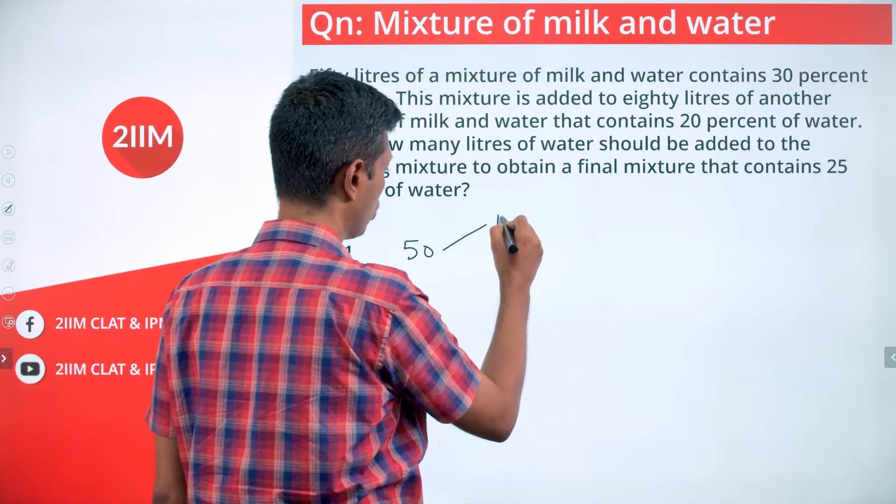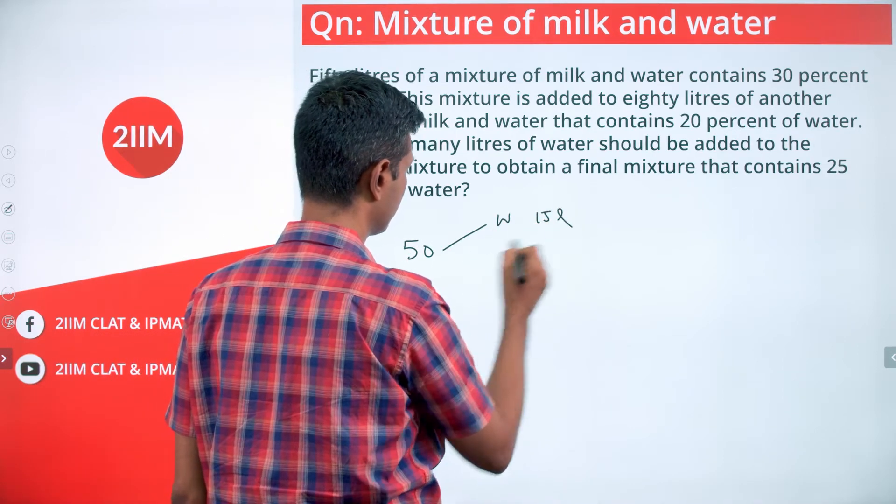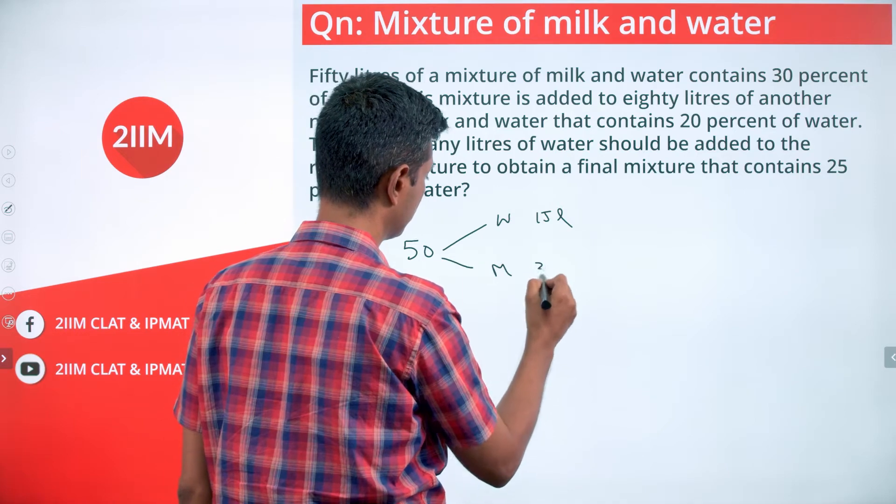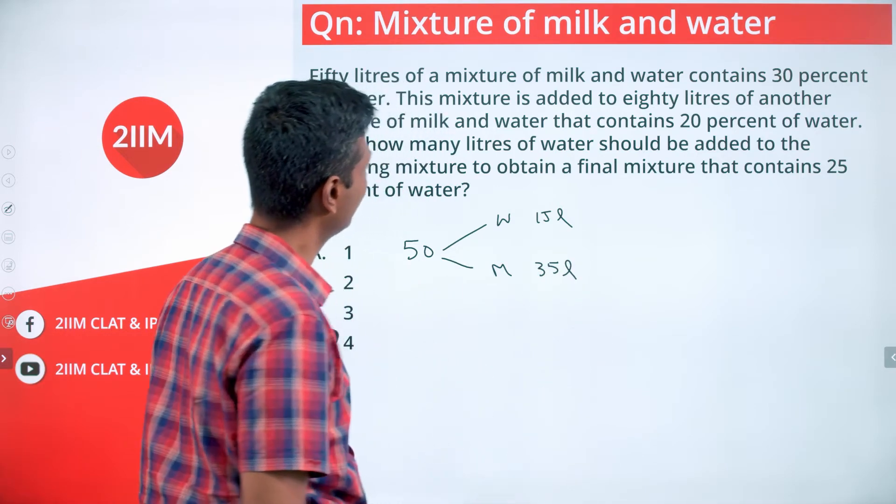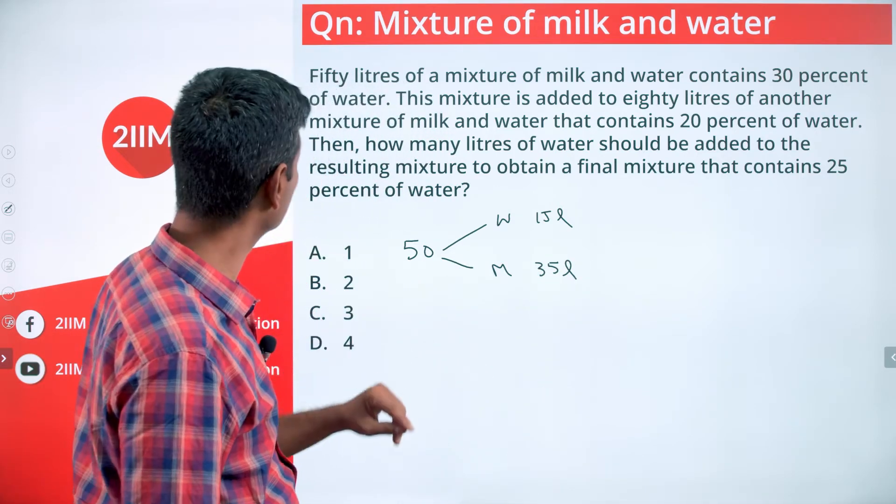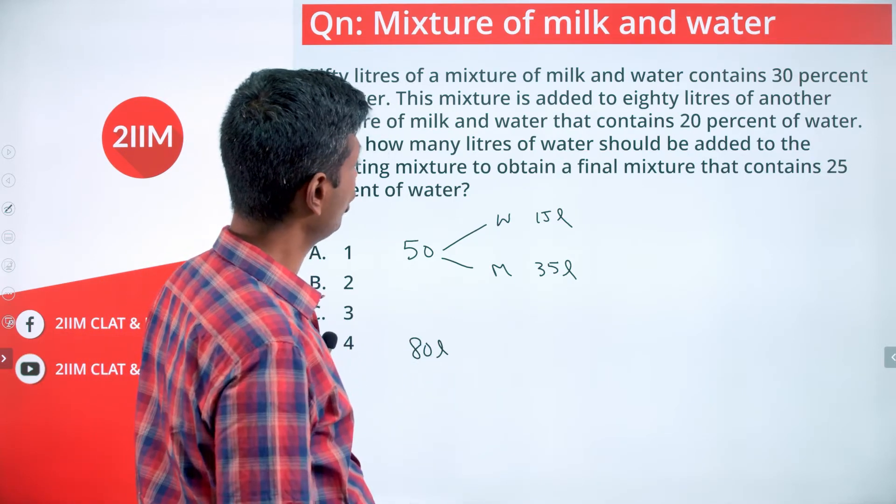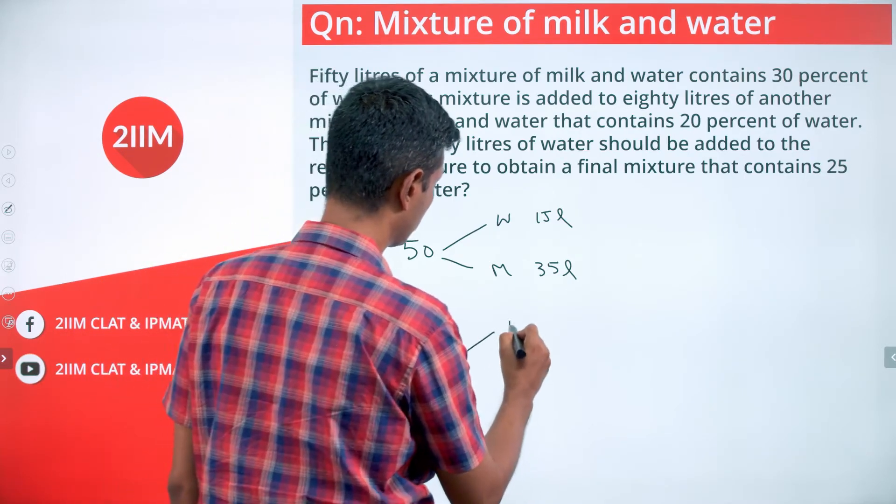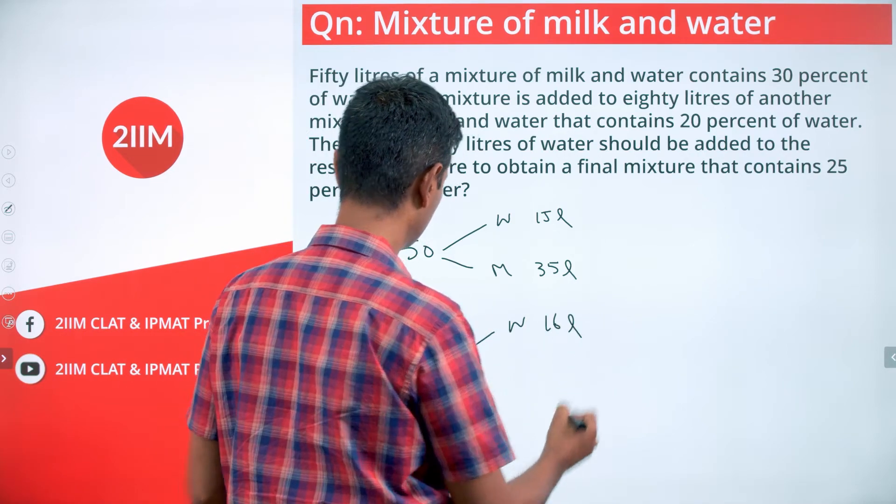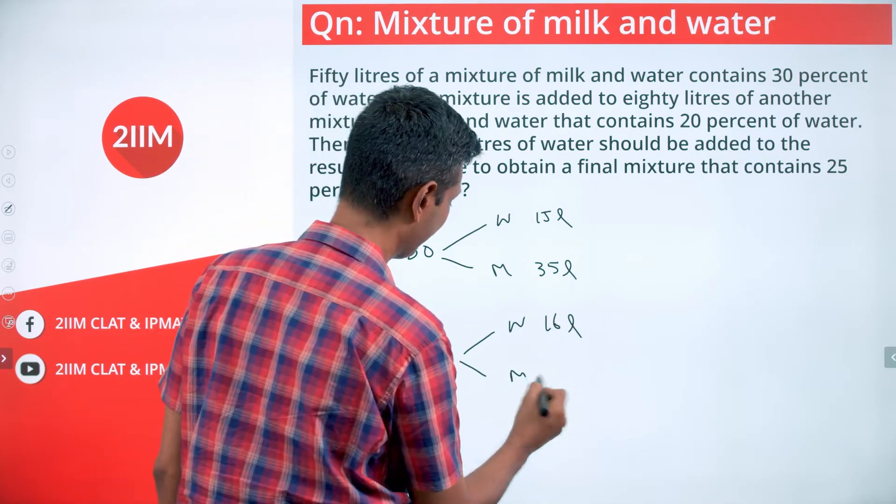50 liters that is 30% water, so water is 15 liters and milk is 35 liters. It is mixed with 80 liters of another mixture that contains 20% water, that is water would be 16 liters and milk would be the remaining 64 liters.